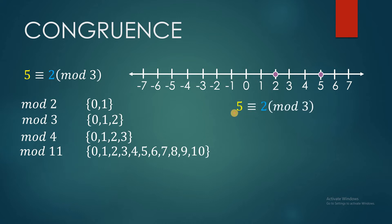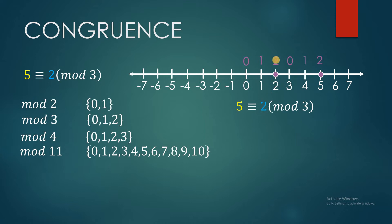Let's go back to our example: 5 is congruent to 2 mod 3. We start with 0 — in modulo 3, this will be equivalent to 0. Then 1 is equivalent to 1. We have 2, which is equivalent to 2. For 3, we now go back to the value of 0. For 4, it's 1. And for 5, it's 2. So at this time, 5 and 2 are now congruent because they both have a value of 2 under modulo 3.